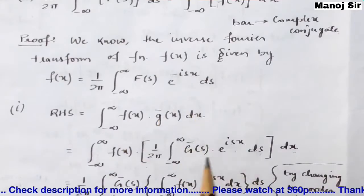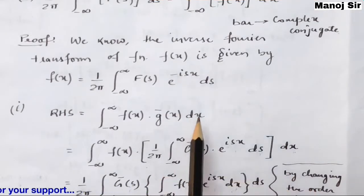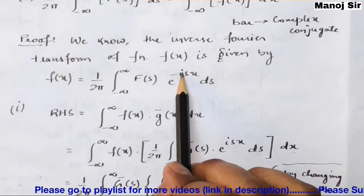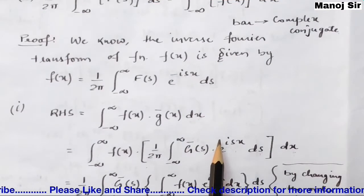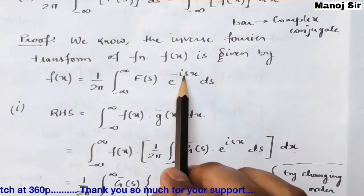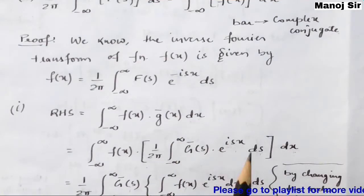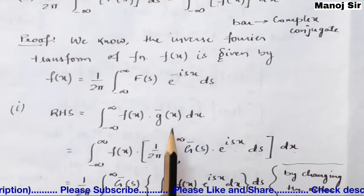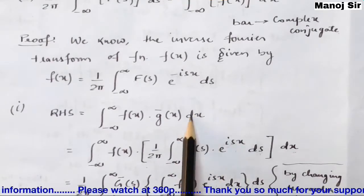To find the complex conjugate of g(x), we put a bar sign and change the sign of i — since we had a negative sign, we write positive sign instead. Had it been positive, we would have written negative. So ḡ(x) = (1/2π) ∫₋∞^∞ Ḡ(s) · e^(+isx) ds, and the full expression becomes: ∫₋∞^∞ f(x) · (1/2π) ∫₋∞^∞ Ḡ(s) · e^(isx) ds dx. Don't forget to write dx.